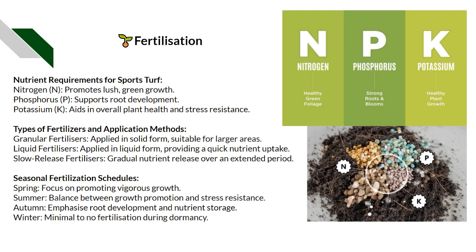Fertilization: the main nutrients are NPK — nitrogen, phosphorus, and potassium. Nitrogen typically promotes lush green growth, phosphorus is normally for root development, and potassium aids overall plant health and stress resilience — though they each do a bit of everything. There are also micronutrients which come into play. Types of fertilizer include granular, liquid, and slow-release. Granular can be slow-release over months or fast-acting over a couple of days depending on what you need.